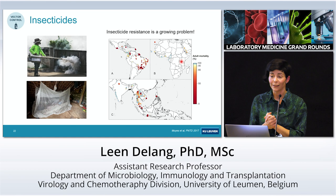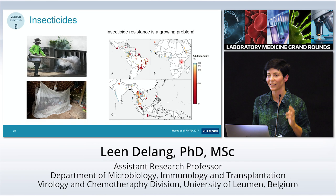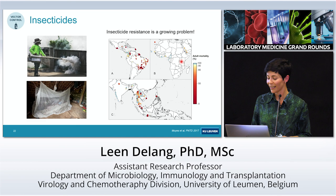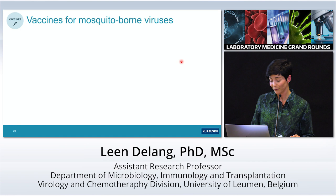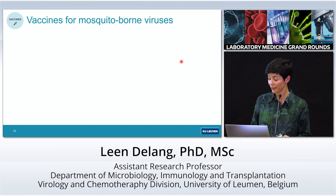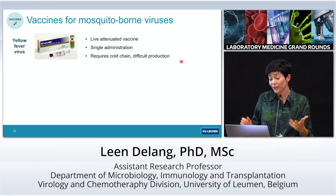There's a lot of research going on into new strategies for vector control, including genetically modifying mosquitoes. Then there are vaccines — we know vaccines are a really good way to prevent infections, as we have seen with SARS-CoV-2. For mosquito-borne virus infections, vaccines could also be very useful, but unfortunately we don't have many.